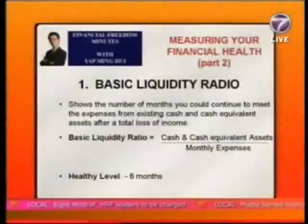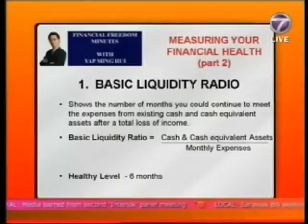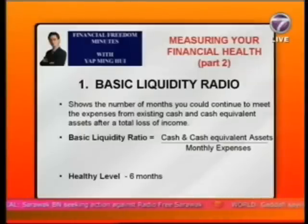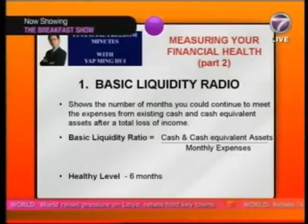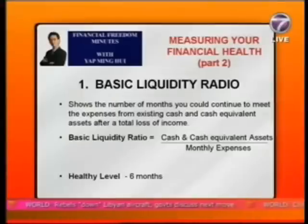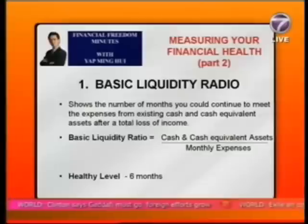Number one is what I call the Basic Liquidity Ratio. This ratio shows the number of months that you could continue to meet your living expenses from your cash and cash equivalent assets after a loss of income. For example, how many months can you last comfortably if there is unemployment or loss of income? To get the Basic Liquidity Ratio, you divide your cash and cash equivalent assets by your monthly expenses. If you have 50,000 in cash and cash equivalents divided by 5,000 monthly expenses, you get a Basic Liquidity Ratio of 10. The healthy level for this ratio should be six months.